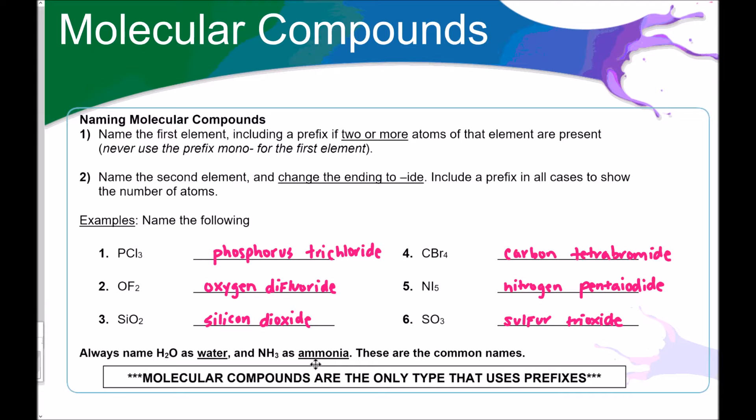It says molecular compounds are the only type that use prefixes. So the reason that I wait to the very end to teach molecular compounds is because people start applying this di, tri, tetra, penta thing to everything. Please don't do that. If you identify something as molecular, then use prefixes. If it's not molecular, meaning it's ionic, an acid, or a base, do not use prefixes.